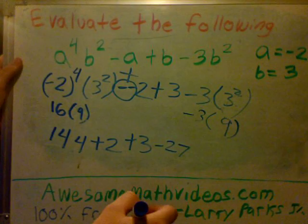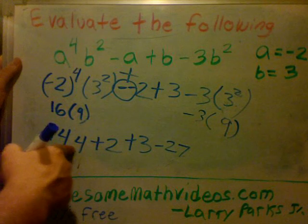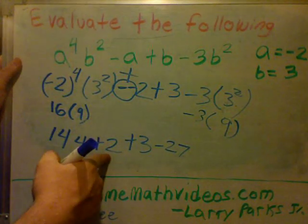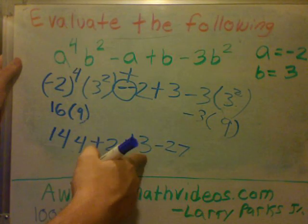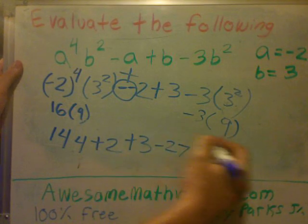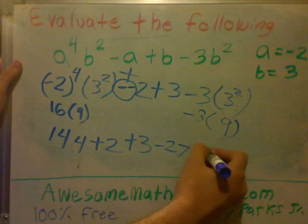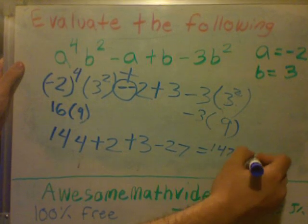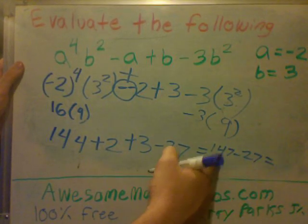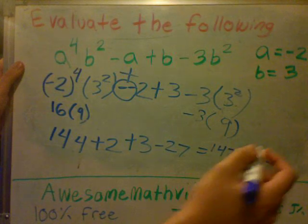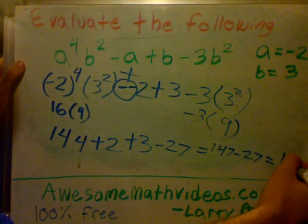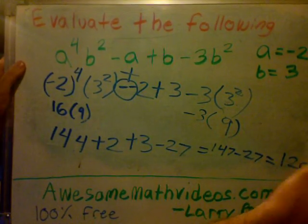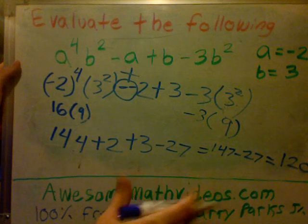Okay, and what we're going to do is we have four numbers. We have 144 plus 2, which is 146. 146 plus 3 is 147. We have 147 minus 27. 147 minus 27 is 120. So after I put all those in, this is what I get.